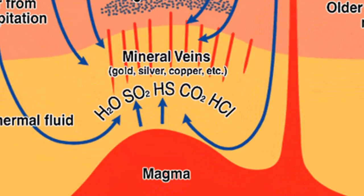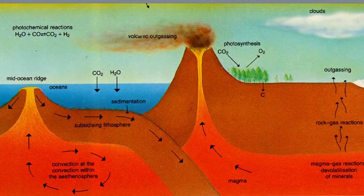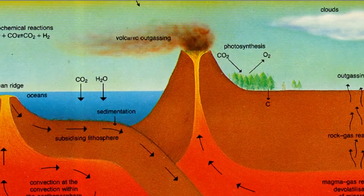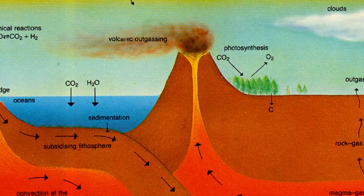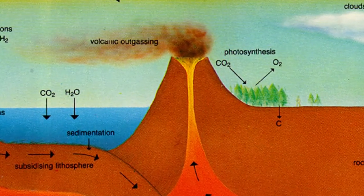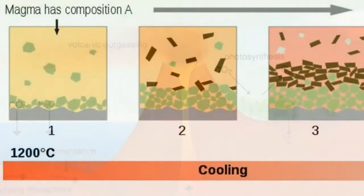As a magma continues to lose heat to its surroundings, the tetrahedra join with each other and with other ions to form embryonic crystalline nuclei. Slowly, each nucleus grows as ions lose their mobility and join the crystalline network.